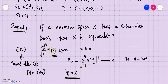It is a trivial consequence that if a normed space has a Schauder basis, then it is separable. However, the reverse part may not be true — not every separable space necessarily has a Schauder basis. There exist spaces which are separable but do not contain any Schauder basis at all. So what we can say is: if a space has a Schauder basis then it is separable, but the converse may not hold. This is an exercise for you all.